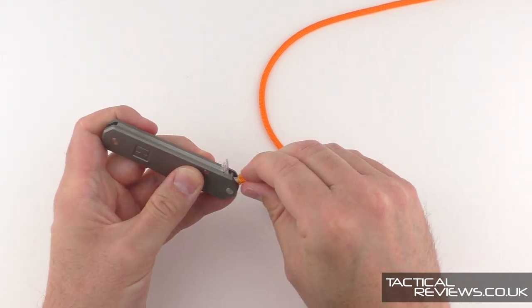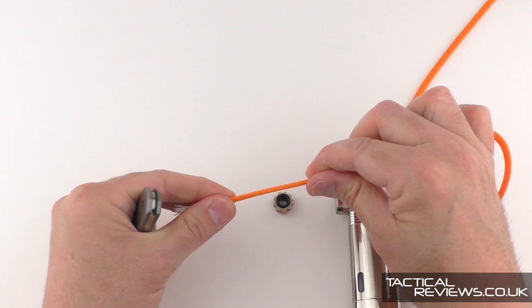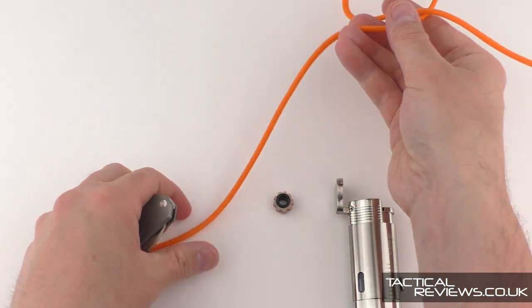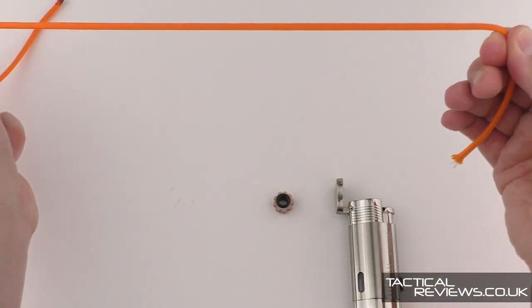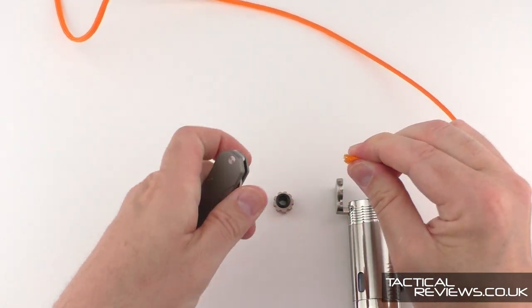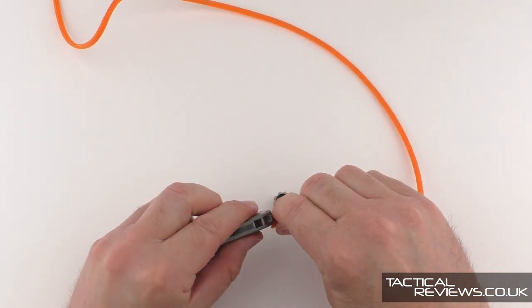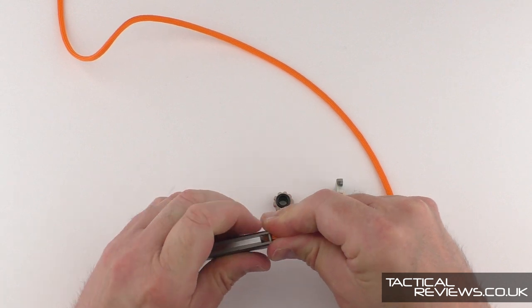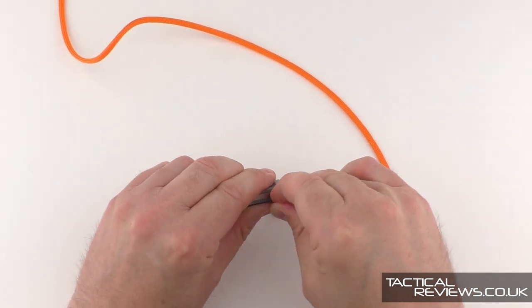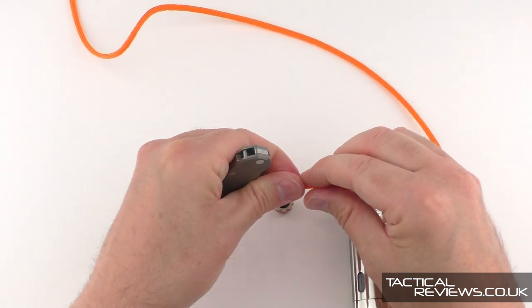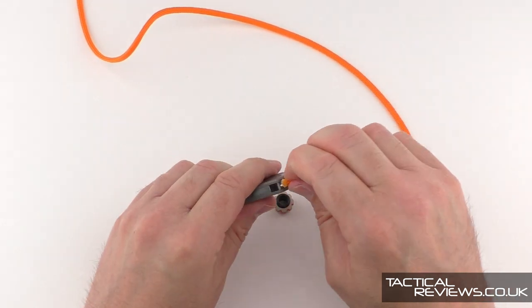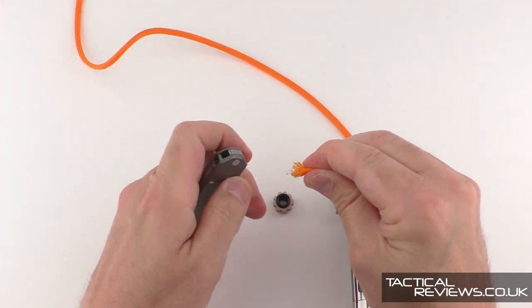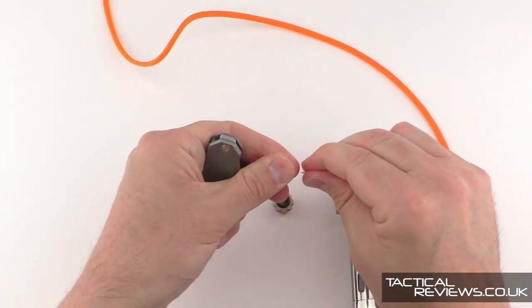That's going to allow me to pass it through the lanyard part for the Penfold, although it's quite tight. So clearly already the Penfold is a little bit awkward for fitting a paracord lanyard.